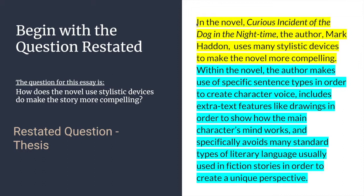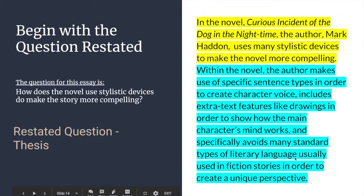Hopefully you divided it something like this. The first sentence — 'In the novel The Curious Incident of the Dog in the Night-Time, the author Mark Haddon uses many stylistic devices to make the novel more compelling' — is just a direct restatement of the question. Then the second sentence goes into detail to answer it: 'the author makes use of specific sentence types to create character voice, includes extra text features like drawings to show how the main character's mind works, and specifically avoids many standard types of literary language in order to create a unique perspective.' This gives the text type, title, author's name, and the three main thesis points.